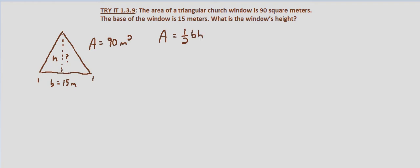And if we solve this for the height we get 2A over b equals the height. So now we just substitute into our formula. Area equals one half base times height.